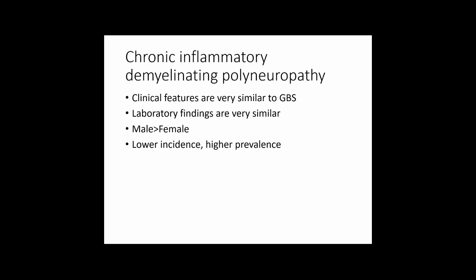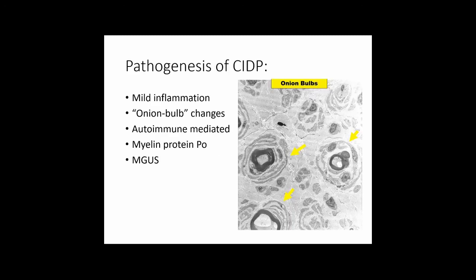Chronic inflammatory demyelinating polyneuropathy (CIDP) is effectively similar to GBS but occurs over a chronic period of time. It tends to have a slower onset, patients may not notice it initially, it is progressive, and may have a relapse-remitting course. It may initially be diagnosed as GBS, but if there is no recovery it is reclassified as CIDP. Unlike GBS, patients with CIDP tend not to have respiratory compromise.